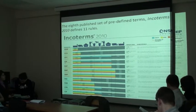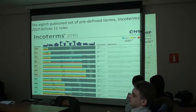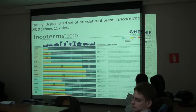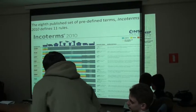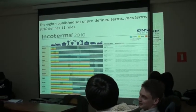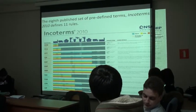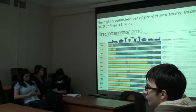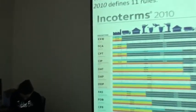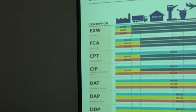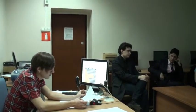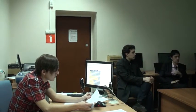DAT, Delivered at Terminal: the seller pays for carriage to the terminal, except for costs related to import clearance, and assumes all risks up to the point that the goods are unloaded at the terminal. DAP, Delivered at Place, is the most used term. The seller pays for carriage to the named place, except for costs related to import clearance, and assumes all risks prior to the point that the goods are ready for unloading by the buyer. Import clearance is a buyer obligation. DDP, Delivered Duty Paid: the seller is responsible for delivering the goods to the named place in the country of the buyer and pays all costs in bringing the goods to the destination, including import duties and taxes. This term places the maximum obligations on the seller and the minimum obligations on the buyer.